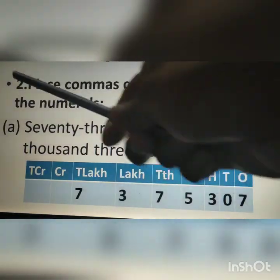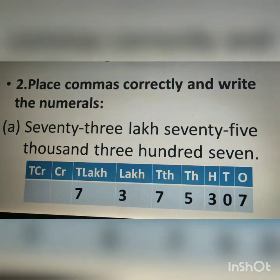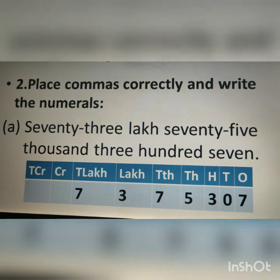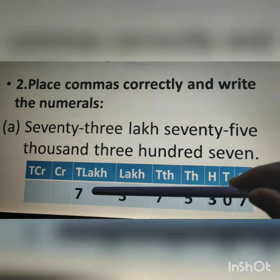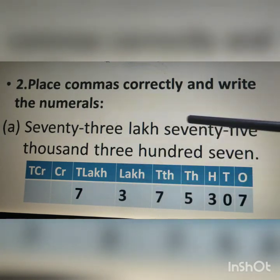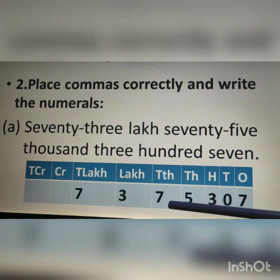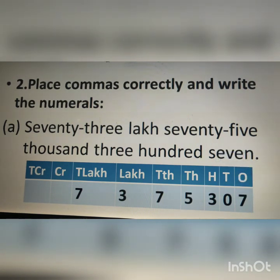Exercise 1.1, second question: place commas correctly and write the numerals. First question: 73 lakh 75,307. So 73 lakhs — 7 will come under 10 lakhs place and 3 will come under lakhs place. Then 75,307: 7 under 10,000, 5 under 1,000, 3 under 100, 0 under 10s, and 7 under 1s.